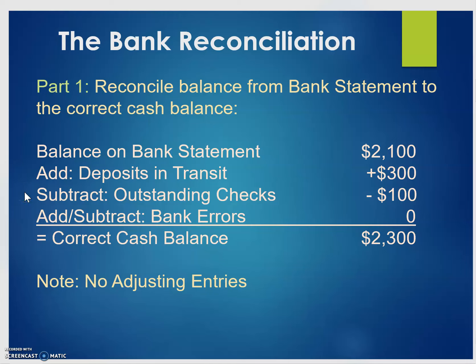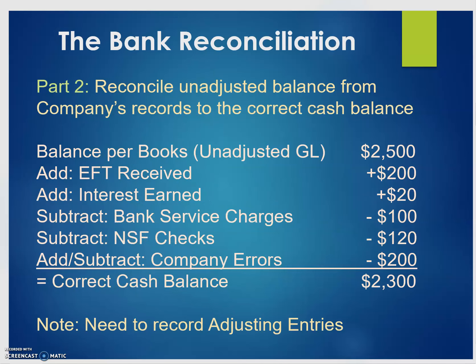Next, we subtract out outstanding checks. For example, a check written to an employee who has not yet gone to the bank to cash it — that money technically belongs to them, not the company. We assume the company would not choose a bank that makes many errors, so there are no bank errors in this example. The correct cash balance therefore is $2,300, and there are no adjusting entries resulting from part one of the bank reconciliation.